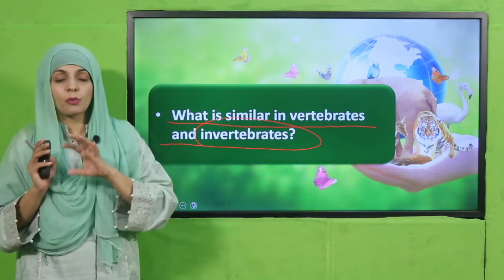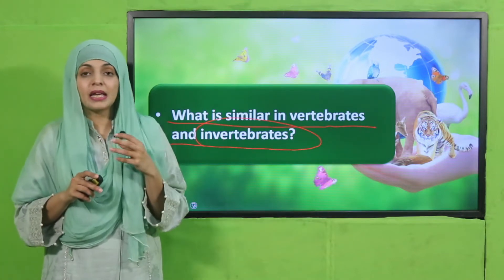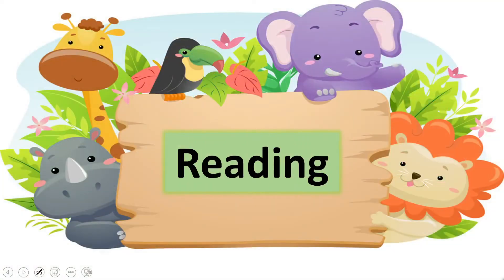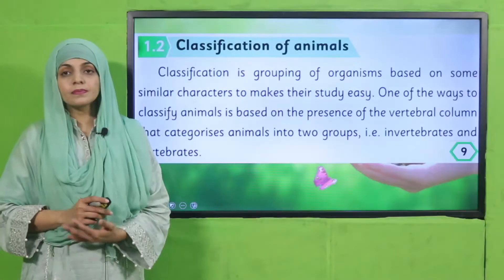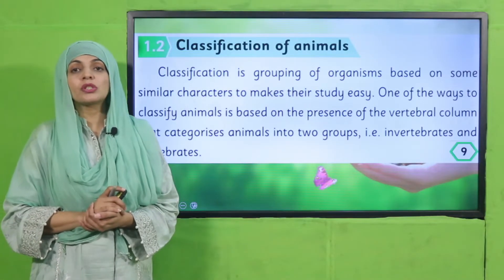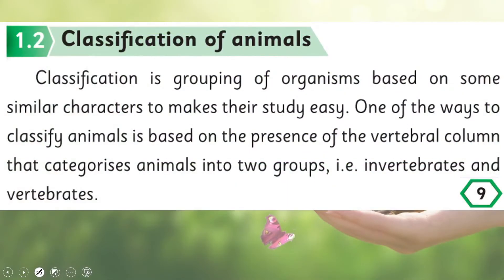Some animals have bones and some do not, but still there are similarities among them. Now let's move forward to the reading. Please open page number nine in your science textbooks. I hope everybody has opened the page. Now let's start reading: Classification of Animals.